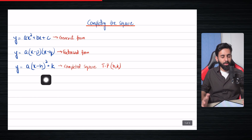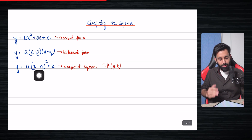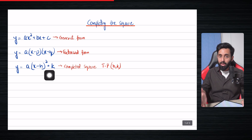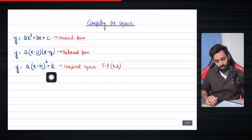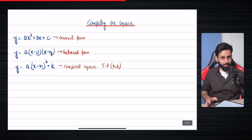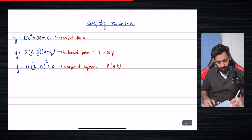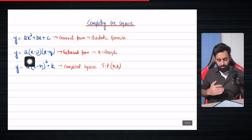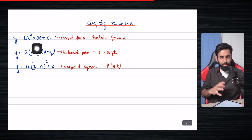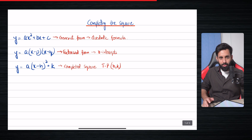Once we have turned a quadratic equation into completed square form, we change the sign of H. For example, if you have x minus 2, the x-coordinate of the turning point will be 2. And if you have plus 3, the y-coordinate K is taken as it is. So to keep it short: you change the sign of the x-coordinate, and the y-coordinate you take as it is. The factorized form is useful to find the x-intercepts. You can always expand and simplify any of the other two forms to bring it back to general form.